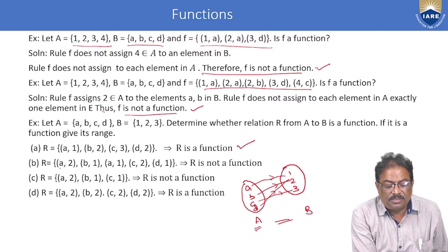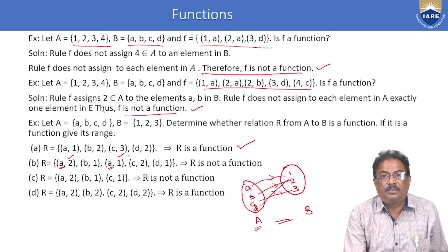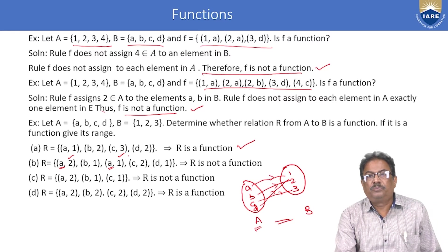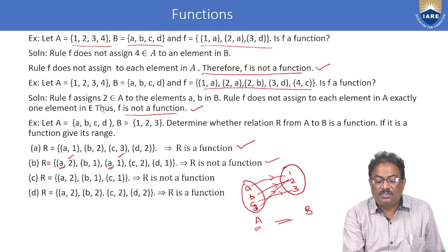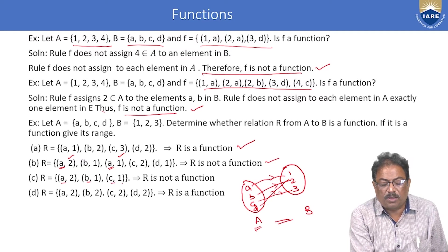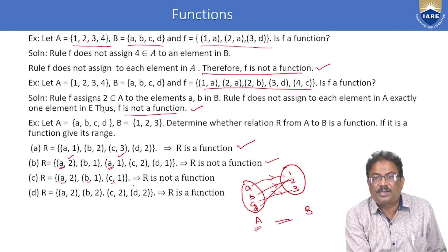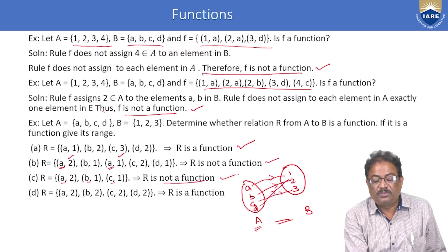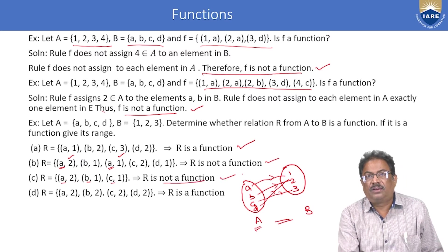For the second mapping in this example, element A maps to more than one element, so it is not a function — it is only a relation. For another mapping, A, B, and C are mapped but there is no image for D, so that is also not a function.